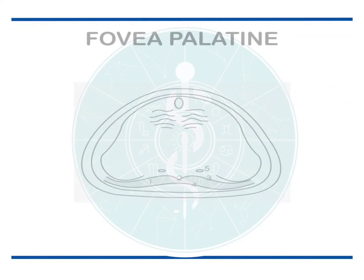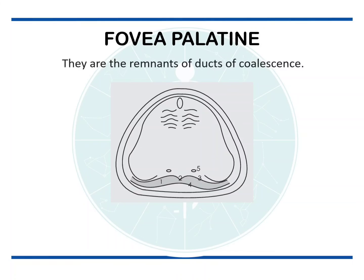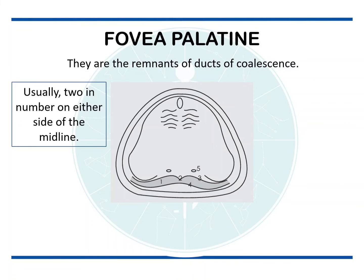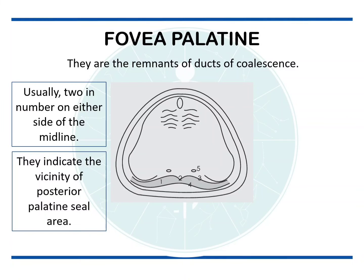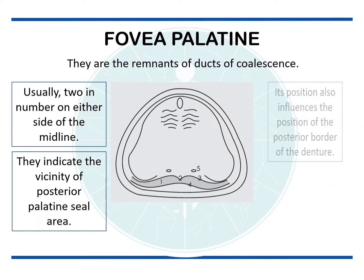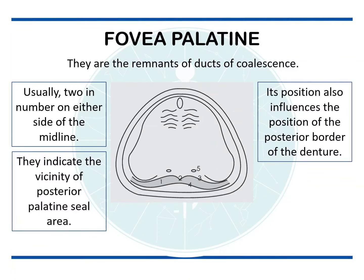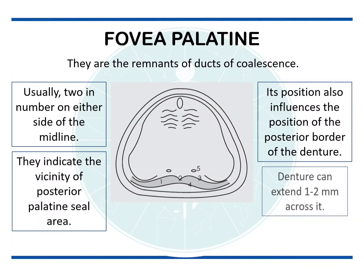Fovea palatinae, also termed the ducts of coalescence, are usually two in number on either side of the midline. They indicate the vicinity of the posterior palatal seal area. They also influence the position of the posterior border of the denture, and the denture can extend 1 to 2 mm across them.